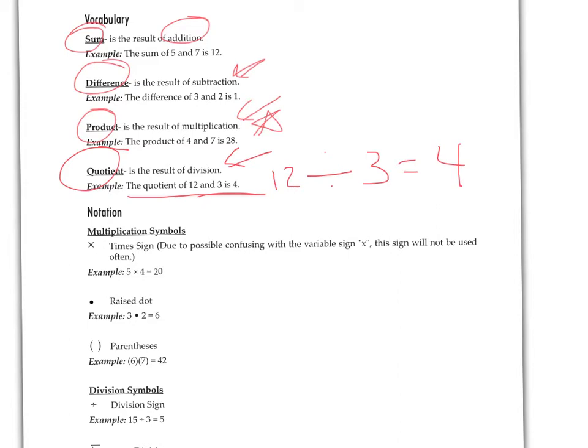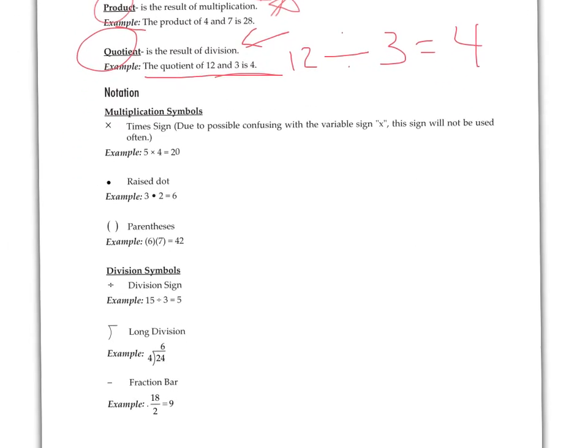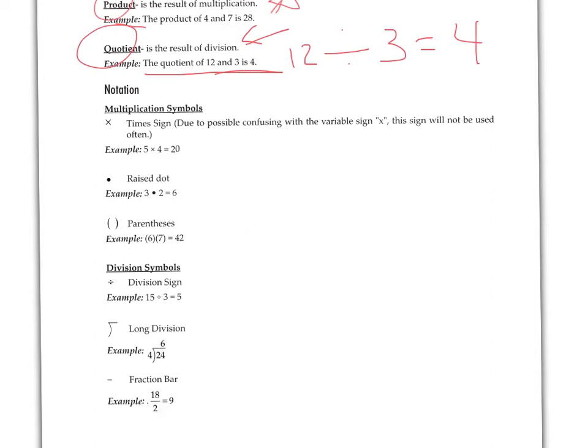So here's some symbols for multiplication. The times sign is the one that you learned earliest when you started learning multiplication in third grade. The raised dot we used a lot in middle school. The parentheses, whenever you see parentheses right next to each other, this means 6 times 7.